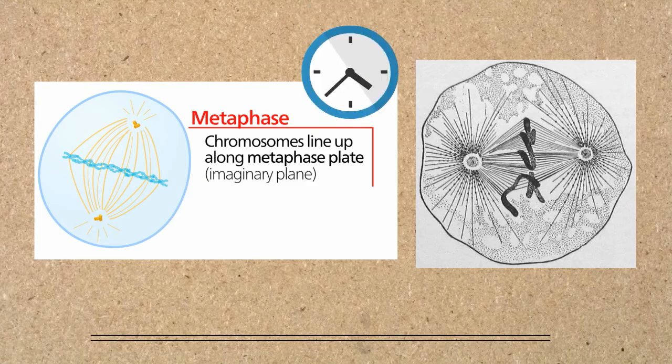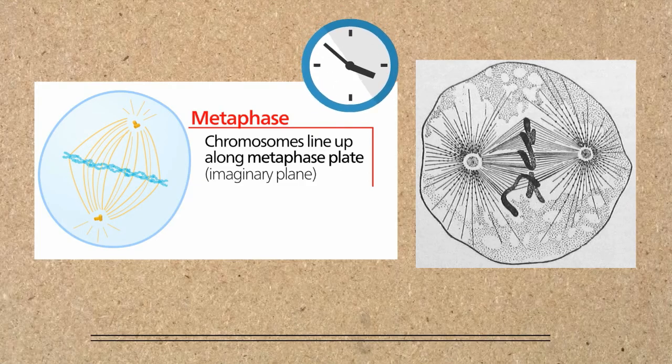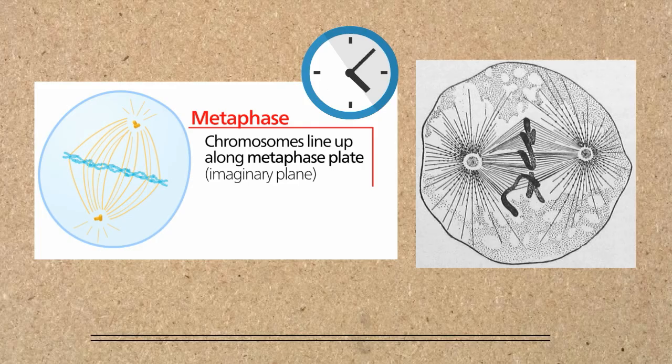Metaphase is the shortest stage of mitosis, but it is important because it helps ensure that new cells have the correct copies of the chromosomes.